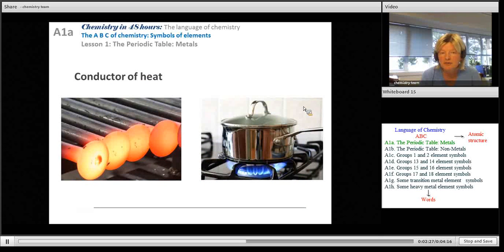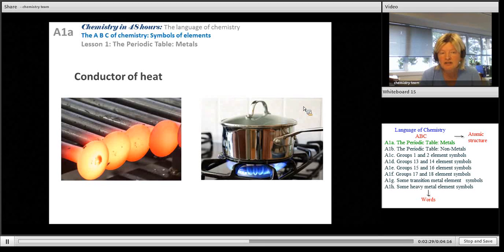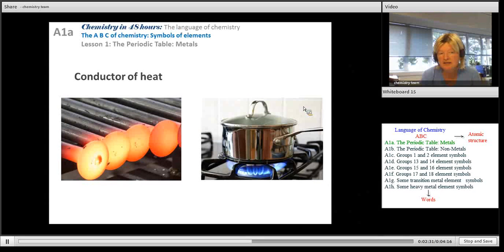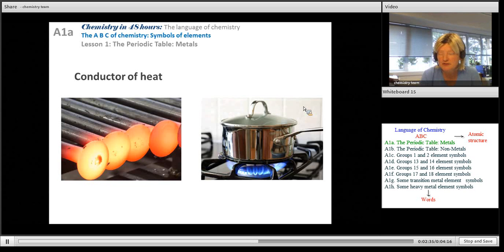Here we see photos showing metals as a conductor of heat. So if you heat iron nails you can see that the heat is traveling through the nail, which makes metals very good for cooking utensils as you can see in this pot.